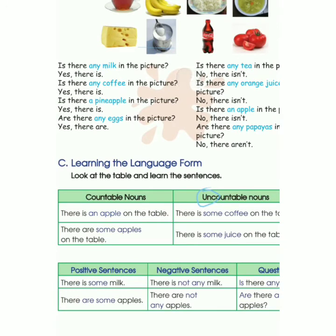Contoh countable nouns: There is an apple on the table. Ada satu apple di atas meja. Kenapa dia masuk ke countable nouns? Karena apple itu bisa dihitung — satu apple, dua apple, tiga apple.